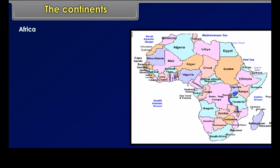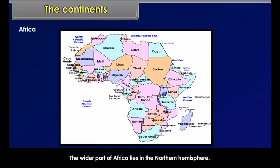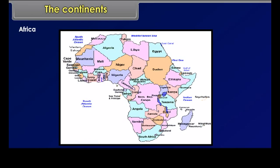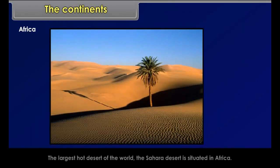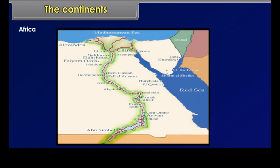Africa. Africa is the second largest continent after Asia. The equator runs almost through the middle of this continent; the wider part of Africa lies in the northern hemisphere. It is the only continent through which both the Tropic of Cancer and the Tropic of Capricorn pass. The continent is bound on all sides by oceans and seas. The largest hot desert of the world, the Sahara Desert, is situated in Africa. The world's longest river, the Nile, flows through Africa.